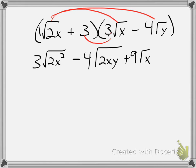And lastly, last one, 3 times negative 4 square root of y is similar. Since 3 has no radical, it's just 3 times the 4, so it becomes minus 12 square root of y.